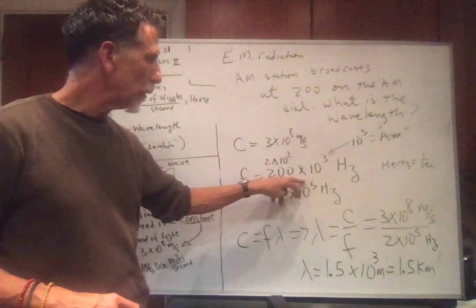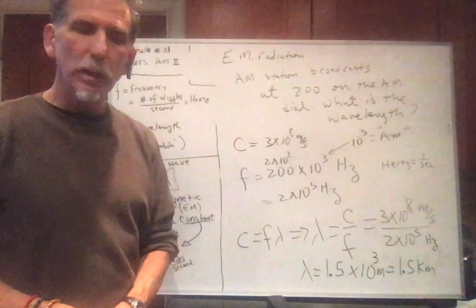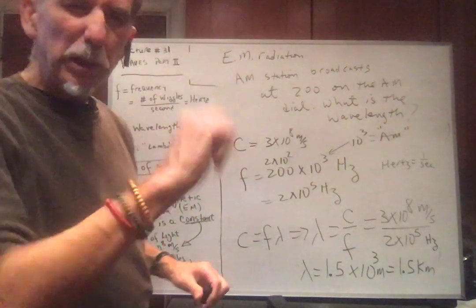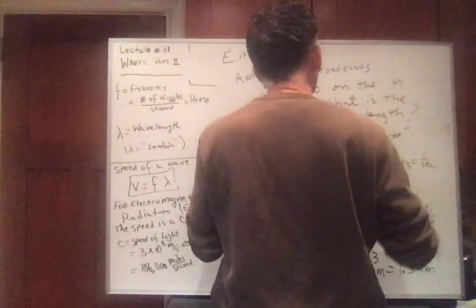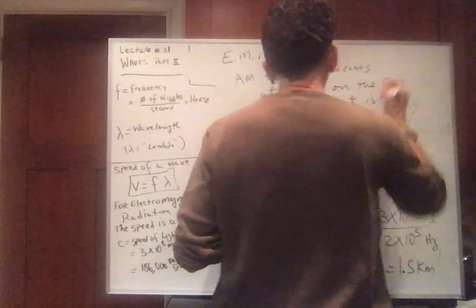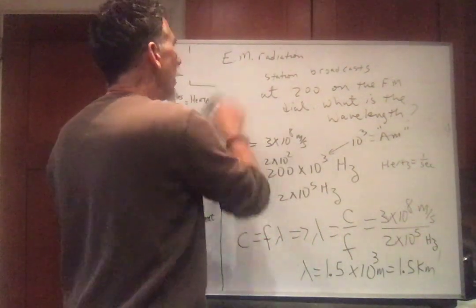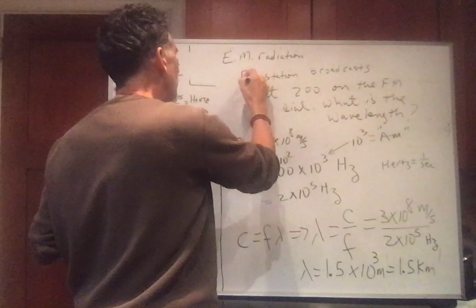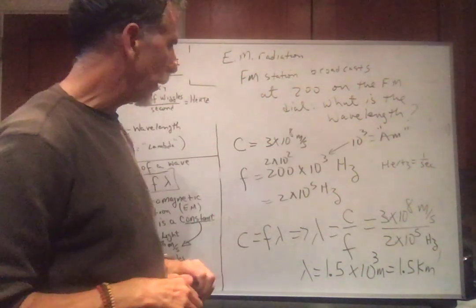So it's AM. It's kilohertz. And the answer is 1.5 kilometers. I'm going to erase it and do something. Suppose I say FM station broadcast at 200 on the FM dial. What is the wavelength?